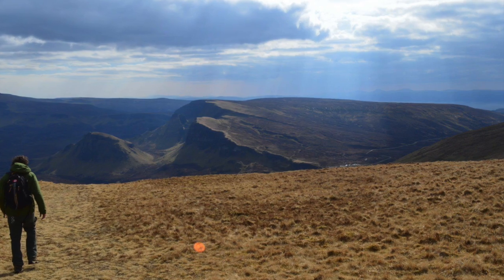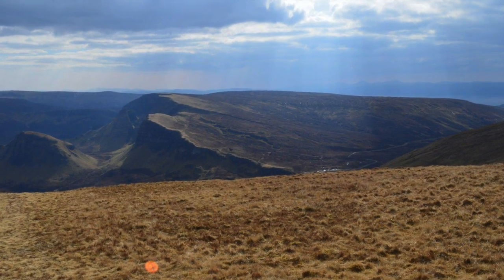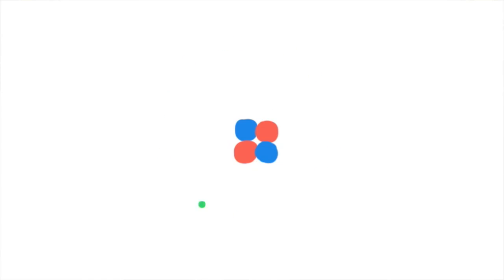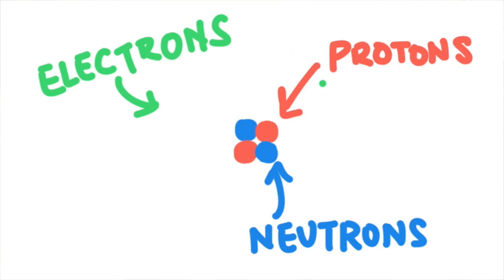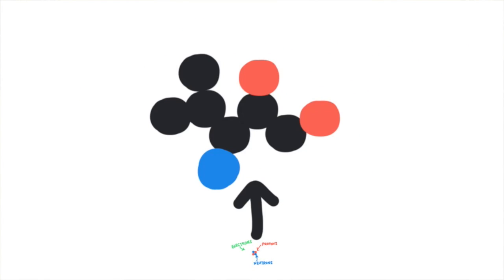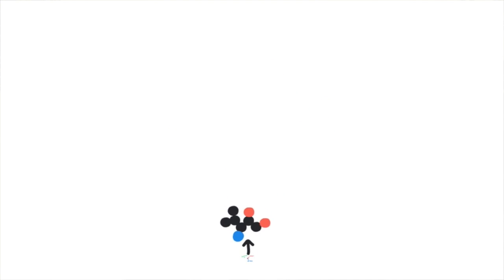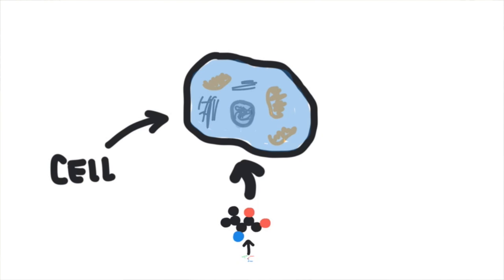Everything starts off with atoms. These are the building blocks of life, and it consists of protons, neutrons, and electrons. Atoms bond to one another and they create tiny molecules that provide the blueprint and building materials of life. And then these simple building materials combine to create cells and structures inside cells that are called organelles.